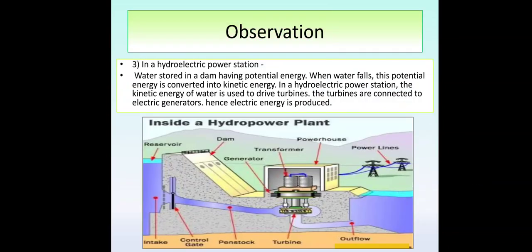Third event: in a hydroelectric power station, water stored in a dam has potential energy. When water falls, this potential energy is converted into kinetic energy. In a hydroelectric power station, the kinetic energy of water is used to drive turbines. The turbines are connected to electric generators, hence electric energy is produced.